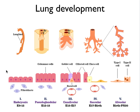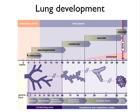The next slide shows this for a human pregnancy. Again, we have the embryonic, pseudoglandular, canalicular, saccular, and alveolar phases. In the embryonic phase the lung bud sprouts, which develops more complex airways in the pseudoglandular phase, with respiratory bronchioles developing in the canalicular phase. The first hint of alveoli appears in the saccular phase, and actual alveoli form in the alveolar phase.